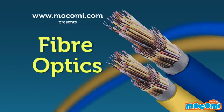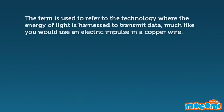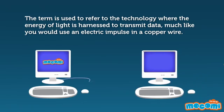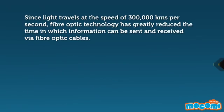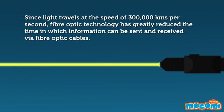What are Fibre Optics? The term is used to refer to the technology where the energy of light is harnessed to transmit data, much like you would use an electric impulse in a copper wire. Since light travels at the speed of 300,000 km per second, fiber optic technology has greatly reduced the time in which information can be sent and received via fiber optic cables.